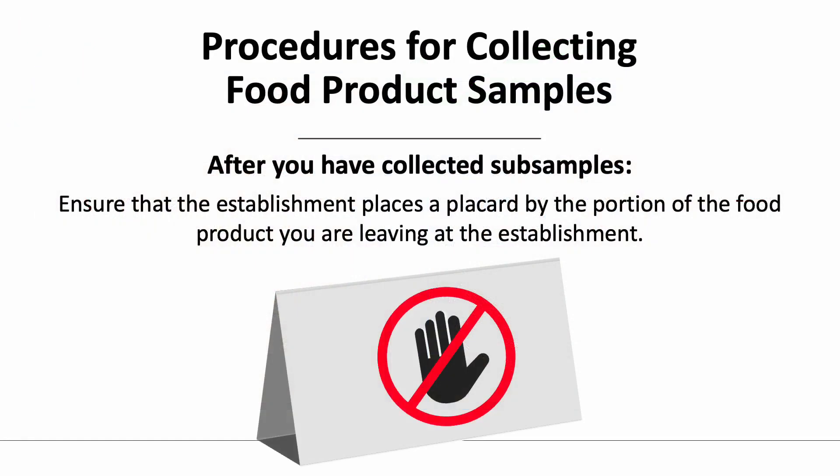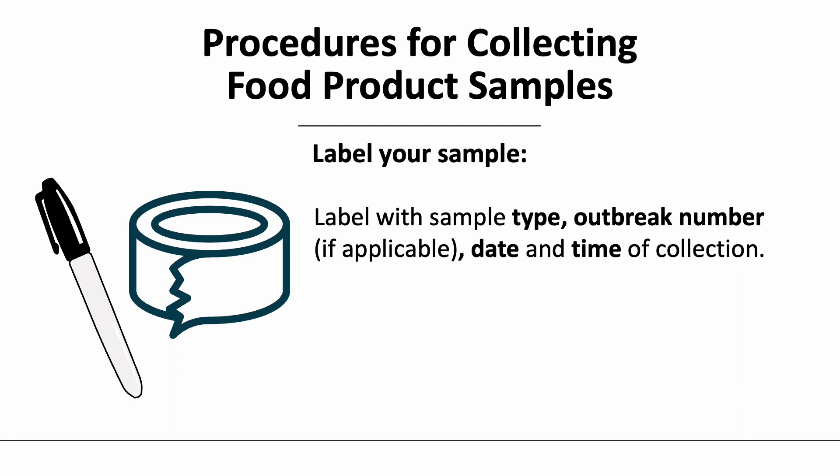After collecting sub-samples, ensure that the establishment places a placard by the portion of the food product you are leaving at the establishment, clarifying that the particular food product should not be used under the assumption that it is contaminated until after laboratory testing results are obtained and relayed to the establishment. However, the final decision on this may be up to the establishment depending on applicable regulations in your jurisdiction. Label each sample container with the sample type, any associated outbreak number if applicable, the date, and the time of collection.